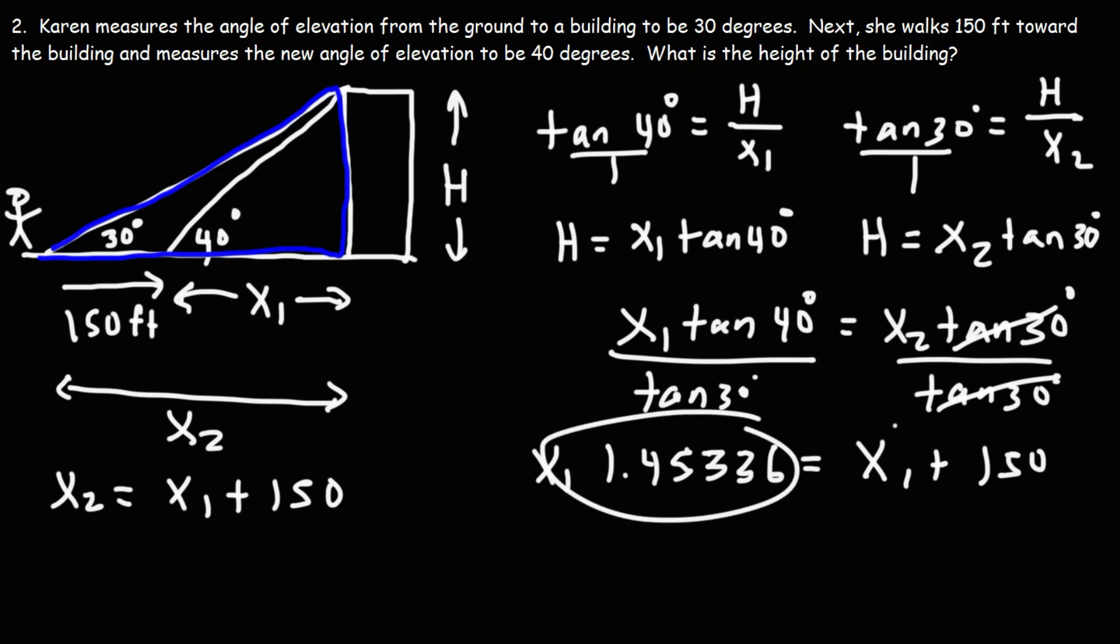Now these two are common terms, but it might be better for me to rewrite this. So this is 1.45336 x1, and that's equal to x1 plus 150. Let's put a 1 here.